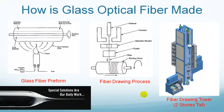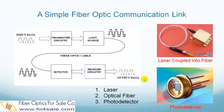A basic fiber optic communication system must have at least three components. The light source, which usually is a laser. The laser is turned on and off quickly by a driving circuit. In this modulation process, the original electronic signal is translated into light signal.